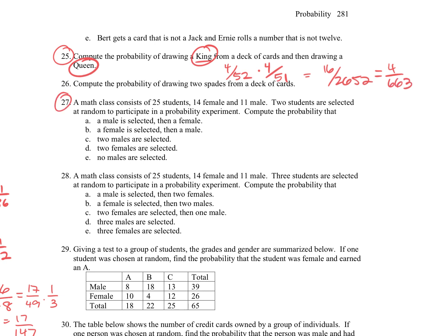For 27, we have a math class that consists of 25 students. It contains 14 female, 11 male. Two students are selected at random to participate in a probability experiment. Compute the probability that a male is selected, then a female. So a male would be 11 out of those 25, and then a female happening would be 14 out of, there would only be 24 students left. That would be 154 out of 600 equals 77 over 300, with reducing.